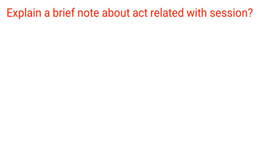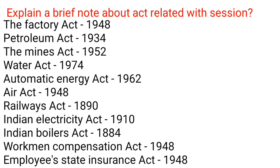Acts related to industrial safety: The Factory Act 1948, Petroleum Act 1934, The Mines Act 1952, Water Act 1974, Atomic Energy Act 1962, Air Act 1948, Railways Act 1890, Indian Electricity Act 1910, Indian Boilers Act 1884, Workmen's Compensation Act 1948, Employees' State Insurance Act 1948.